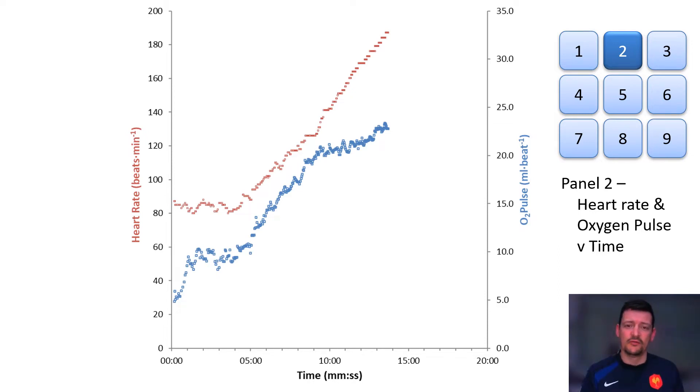This is panel 2 of the Wasserman 9 panel. It plots heart rate and oxygen pulse against time. I'm not going to dive too far into what heart rate is given the audience, but oxygen pulse probably does require a little explanation.